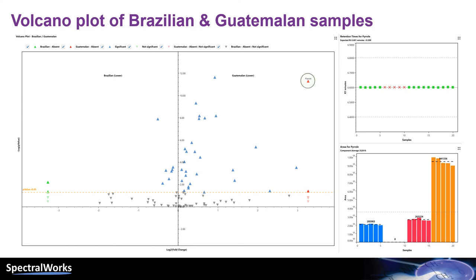Take, for example, Pyrrole. When present, the retention time of the component was stable over the dataset. Over the five Brazilian samples in the bar graph, Pyrrole was found and was relatively consistent. In the Guatemalan samples, we can easily see that Pyrrole did not exist. This is indicated by the red crosses in the RT display and the lack of data in the bar graph.